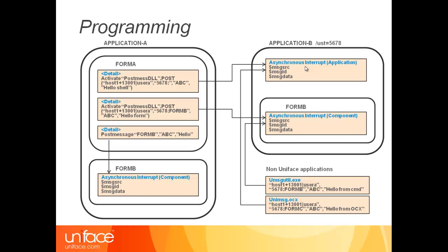Next, we'll see communications from a Uniface component to an external Uniface component. PostMessage isn't available here because it can't address a network location outside of the current runtime environment. Hence, we use activate statements with a postDLL signature. It activates a particular operation with the same four parameters the external programs used: network name host1 plus 13001, user A, and destination 5678 — in one case with no instance name, targeting the startup shell's async interrupt trigger directly, and in another targeting form B specifically.